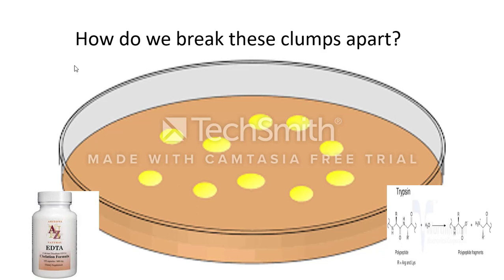We can then take these cells individually, put them on a petri dish, and attempt at growing them. Cells need food and other resources. For food, they usually need glucose,